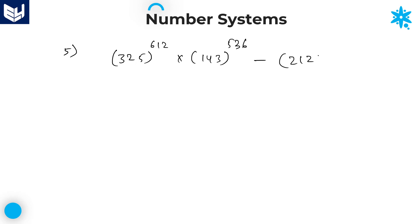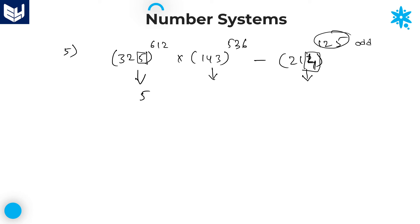The full expression is: 325^612 × 143^536 − 212^125. The number 325 ends with 5, which belongs to first category digits, so the required units place digit is always 5. For the subtraction term, suppose we take 214 instead of 212 — since it ends with 4 (second category) and the power 125 is odd, for an odd power of 4 the required units place is 4.